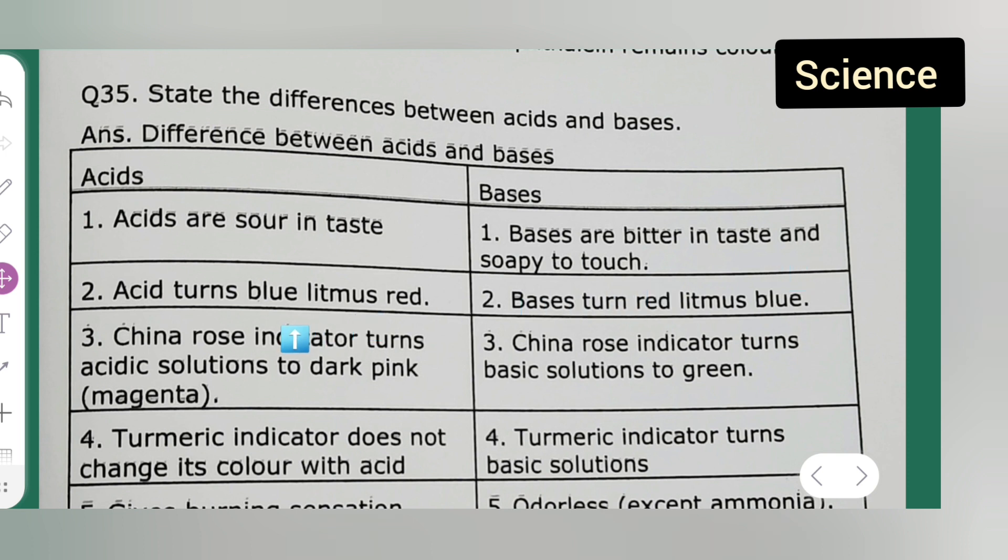Second point under acids: acid turns blue litmus red. Acid is turning blue litmus into red, whereas bases turn red litmus to blue. If the litmus paper is red it will turn it into blue.